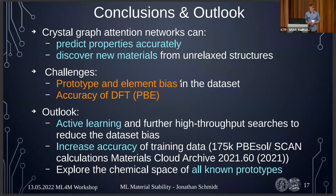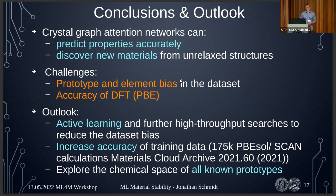The second challenge is the accuracy of DFT. We use the PBE functional, as basically everybody doing high-throughput calculations does, but it's quite inaccurate for formation energies. We recently published a dataset of 475,000 PBEsol geometry optimizations with SCAN single-point calculations. SCAN should give better formation energies and distances to the convex hull for most material groups. That dataset is also available online — about 10–15 million calculations — and includes band gaps computed with SCAN and high-k-point sampling.